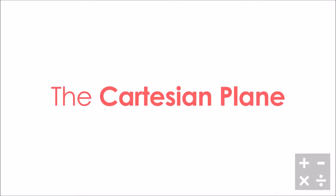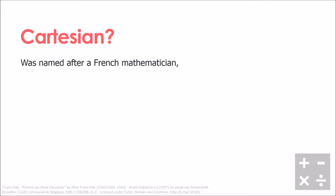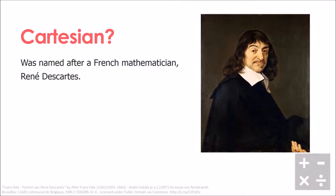In this video we're going to take a look at what is called the Cartesian plane. The word Cartesian comes from being named after a French mathematician named René Descartes, who was really interested in how we describe points. The way he came up with the Cartesian plane was by watching flies on the roof of a tiled ceiling and trying to describe them.